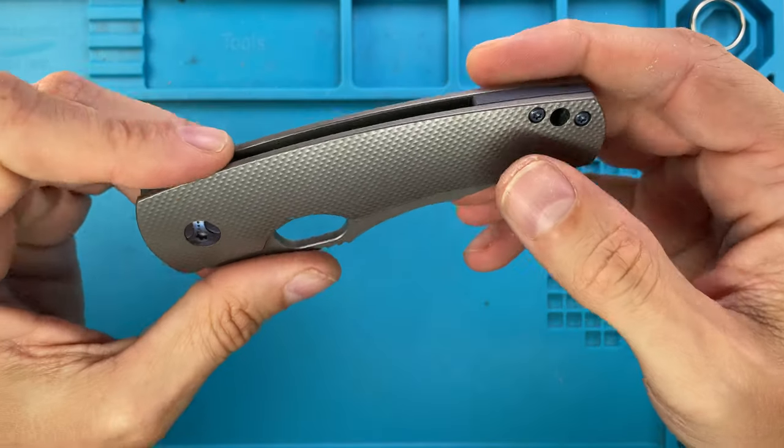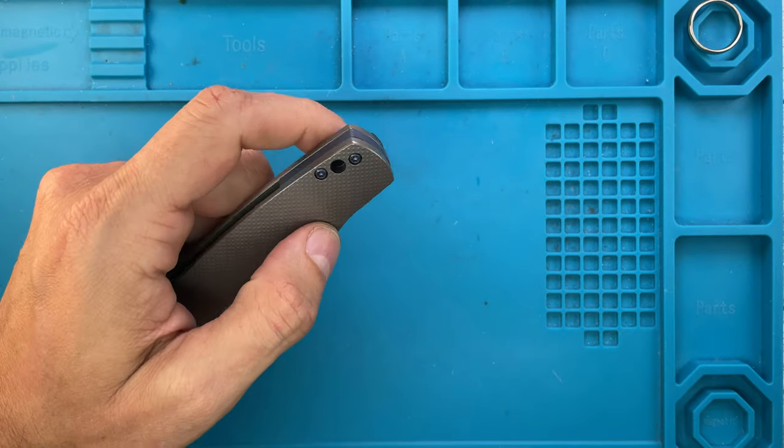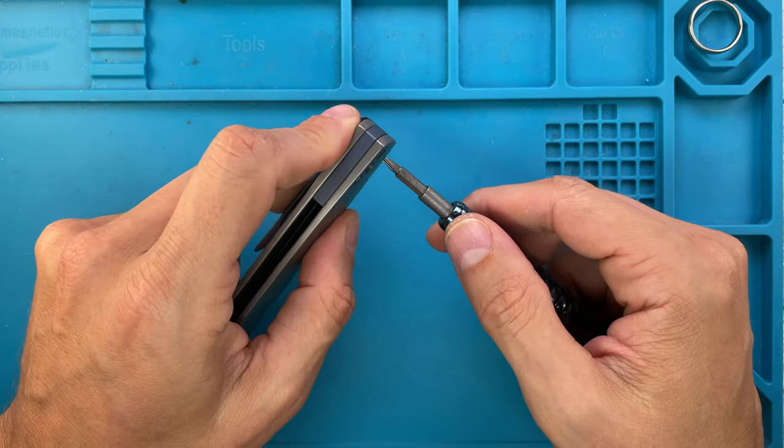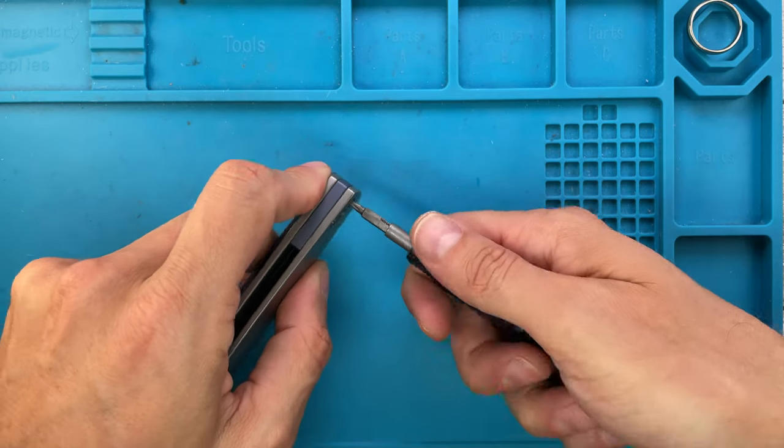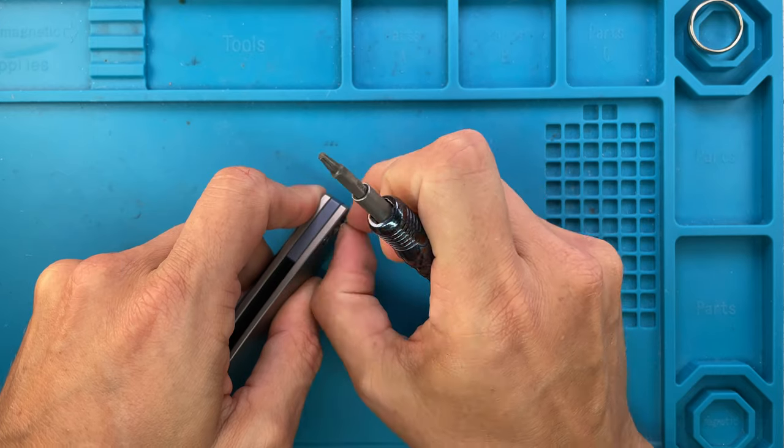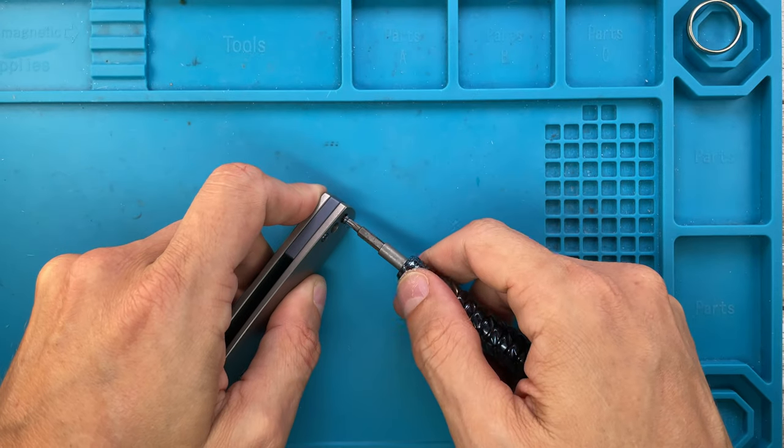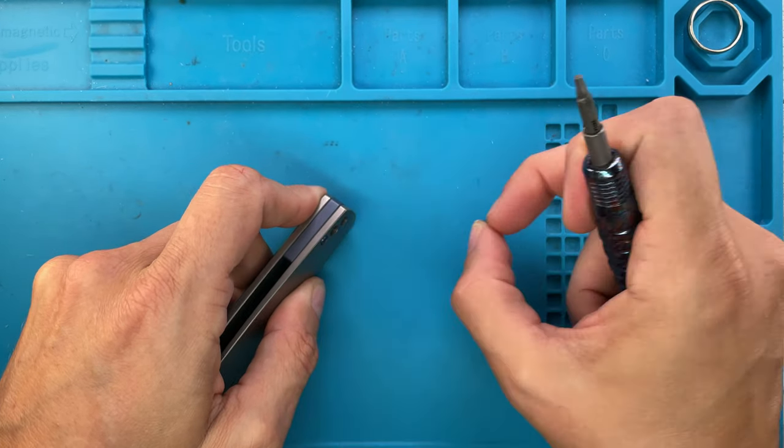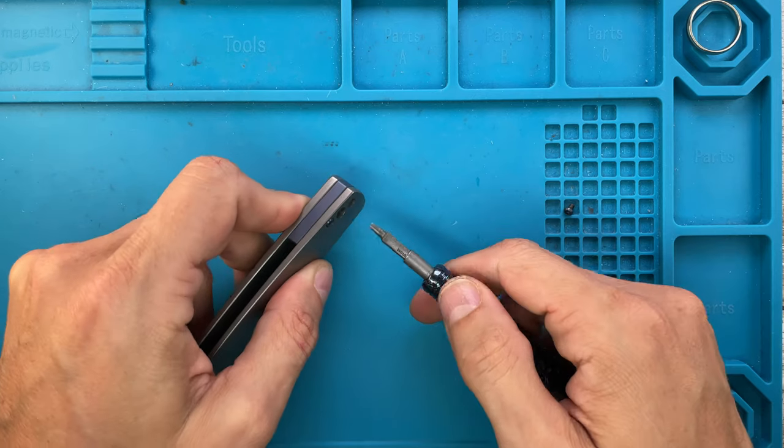Let's get started. So we're gonna have T8 torx bit screws for the handle, and you just take this guy apart nice and gently like so. Nicely anodized, he's doing a great job by the way guys, check him out.